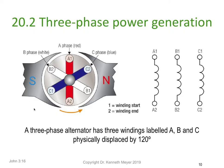Welcome to lesson eight, part two. We're now into section 20.2, using a textbook as the basis of our lessons. This is now three-phase power generation. If you remember from our previous lesson, we looked at single phase, then two phases at 90 degrees, then two phases at 120 degrees.